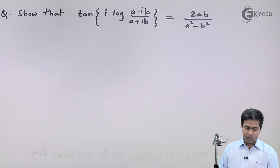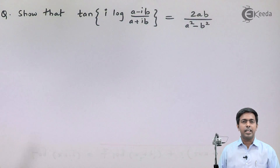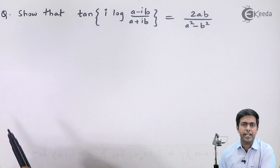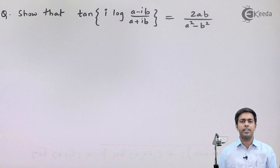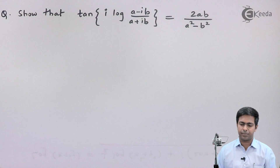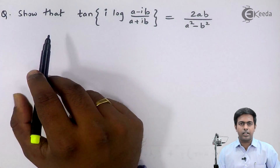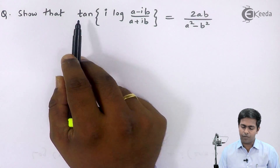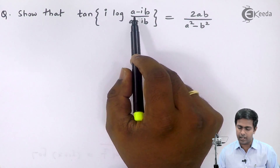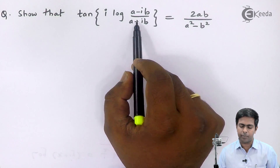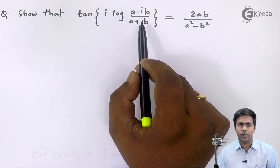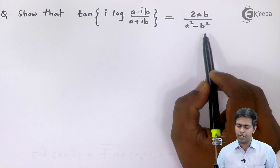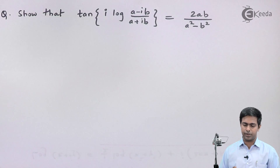Hi friends. In this video we are going to see a problem based on logarithm of complex numbers. The question is: we have to show that tan of i·log((a − ib)/(a + ib)) is equal to 2ab/(a² − b²).